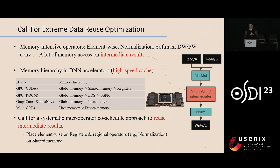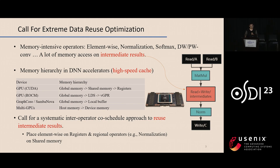So what can we do to optimize these memory-intensive workloads? One important reason for this memory bottleneck is that many new model architectures contain a lot of memory-intensive operators like elementwise, normalization, softmax, and many others. These operators incur a lot of memory access on the intermediate results between them.